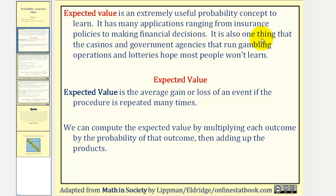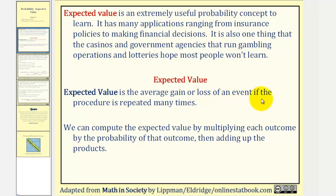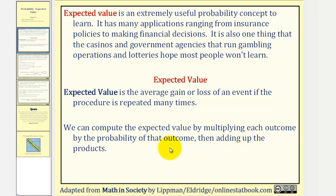It is also one thing that casinos and government agencies that run gambling operations and lotteries hope most people won't learn. Expected value is the average gain or loss of an event if the procedure is repeated many times. We can compute it by multiplying each outcome by the probability of that outcome, then adding up the products.